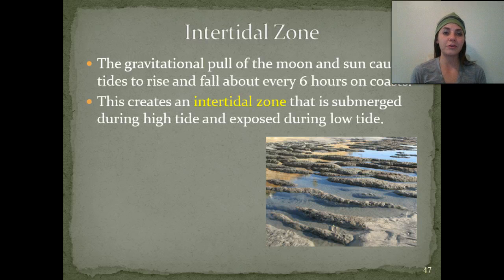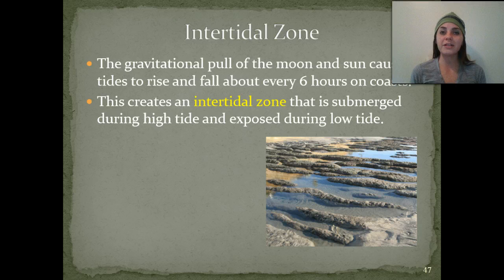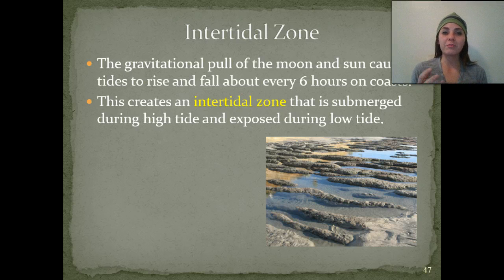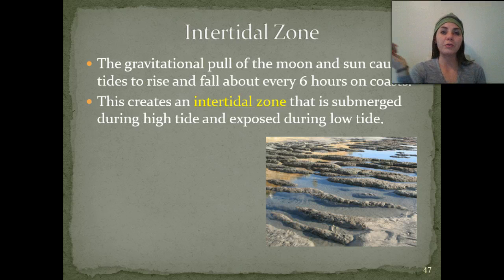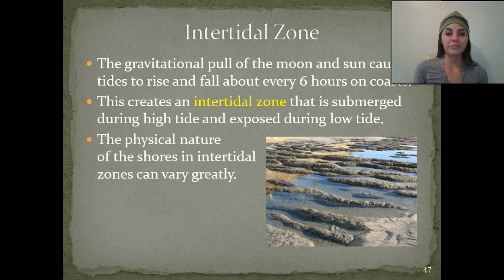Next, we're going to discuss the intertidal zone. The gravitational pull of the moon and the sun causes the tides to rise and fall about every six hours on the coasts — that's our intertidal zone. It's submerged during high tide and exposed during low tide, so animals and plants here have to be adapted to both water and open air environments. You'll see plants with strong holdfasts that hold onto rocks with very flexible stems. You won't see many fish, but you'll see a lot of crustaceans, starfish, sea urchins, and hermit crabs.